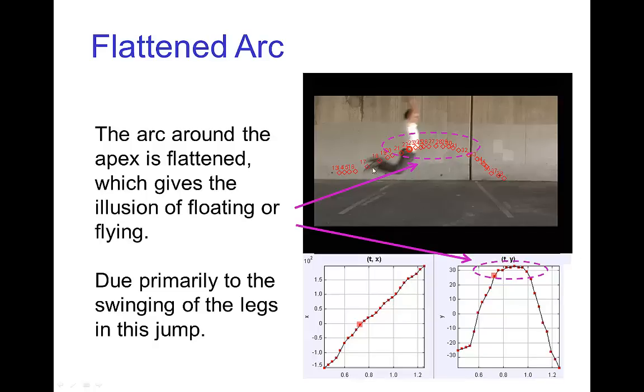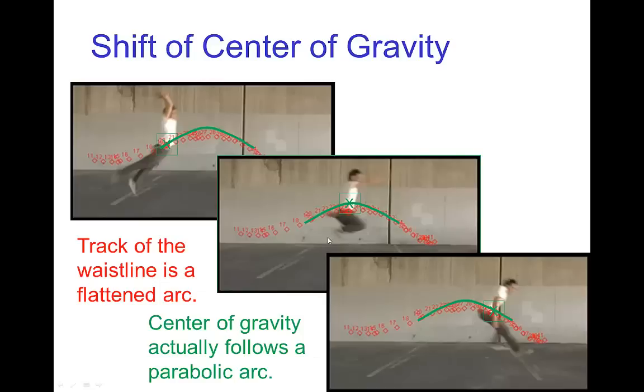Now this effect is primarily due in this jump to the swinging motion of the legs. So what's happening is the center of gravity, which I marked here in green, is actually following a parabolic path of action. What's being tracked is not the center of gravity but the location of the waistline. And that is flatter because the center of gravity has actually shifted higher in the torso when the person swings their legs upward. So that is what causes this illusion that the center of gravity in this big jump is flatter.